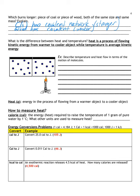Let's look at the difference between heat and temperature. Heat is not an actual thing — it's a process: the flowing of kinetic energy from a warmer object to a cooler object. Temperature, on the other hand, is the average kinetic energy — it's a measurement of the kinetic energy of the particles inside a substance.